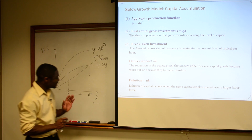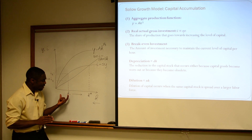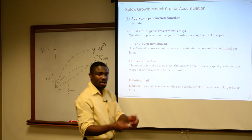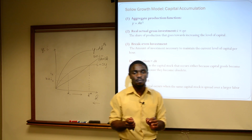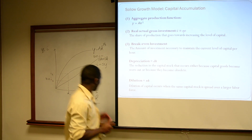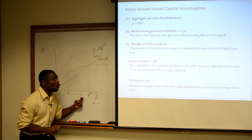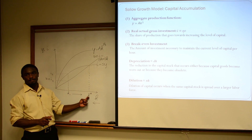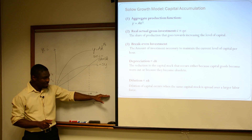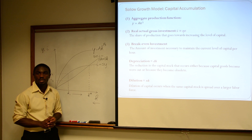So essentially, what Solow's model is telling us is that if we're looking for capital to be the sustaining driving force for growth, we're looking in the wrong place. Because capital is going to increase, but only up to a point. Once we get to K star, if we go beyond, there's going to be pressure for capital to fall.